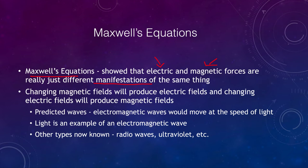A changing magnetic field produces an electric field, and changing electric fields will produce magnetic fields. We already looked at how magnetic fields can be produced by an electrical current running around an iron object — you can run that current around and generate a very strong electromagnet.